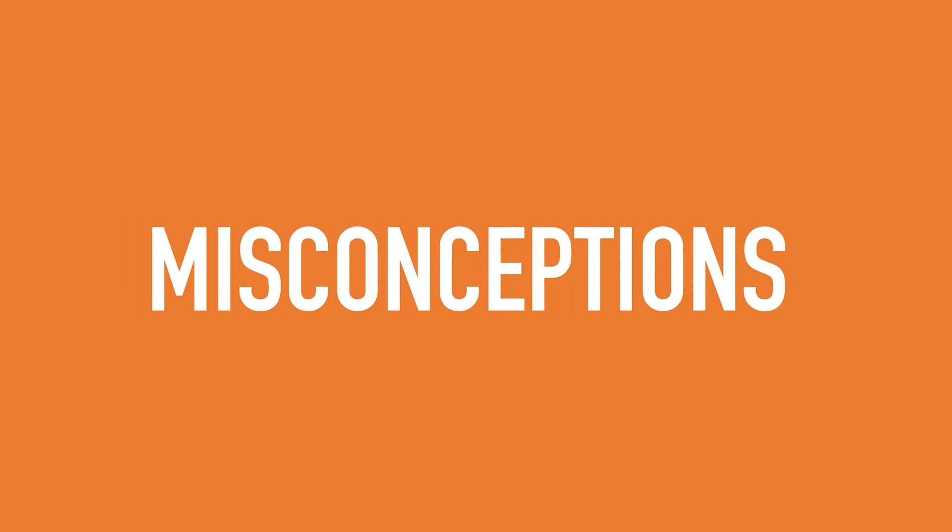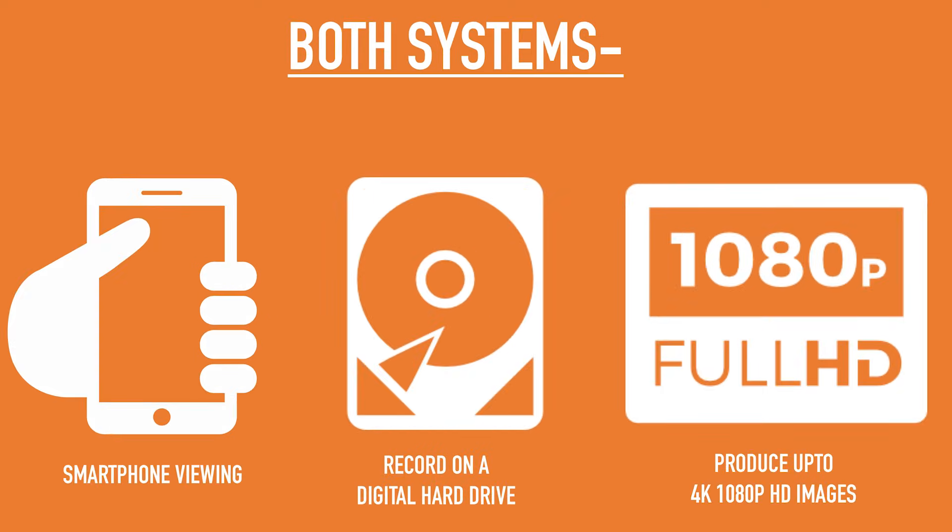We're going to begin with some misconceptions about both standards. Both analog and IP will allow you to remotely monitor your system on a smartphone. They both record on a digital hard drive and they can both produce up to 4K 1080p high definition images.